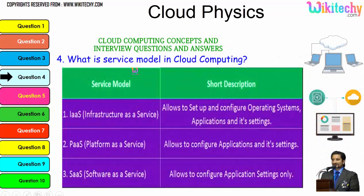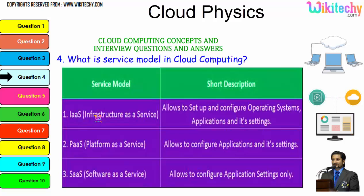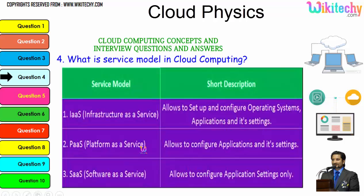The question is: what is the service model in cloud computing? There are three major service models. Infrastructure as a Service allows you to set up and configure the operating system, applications, and settings — you are given a server and can put whatever you want on it. Platform as a Service allocates you a specified operating system and you can install any applications and settings. Software as a Service gives you a software and you can do whatever application settings you want.